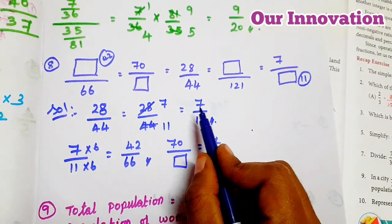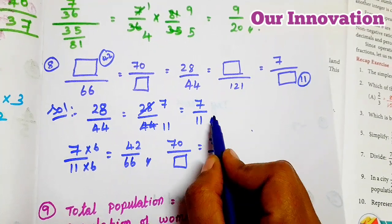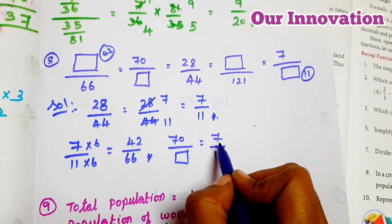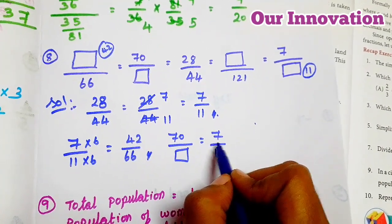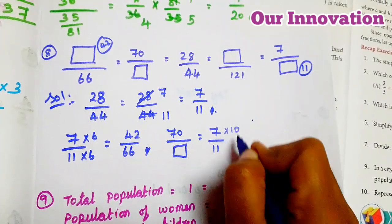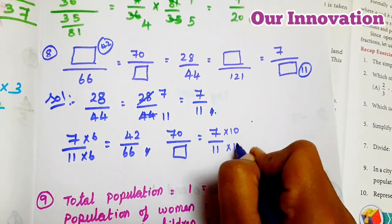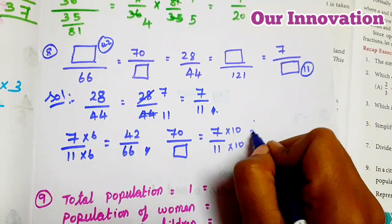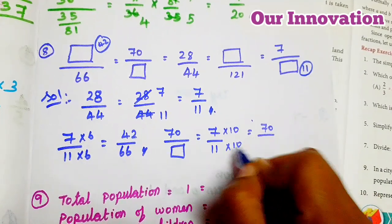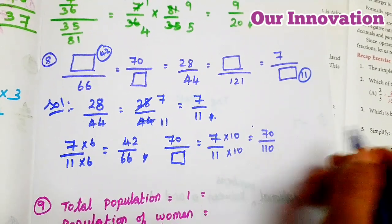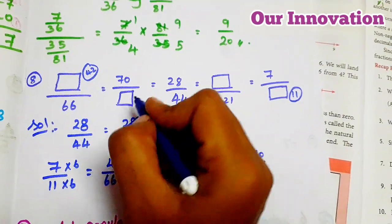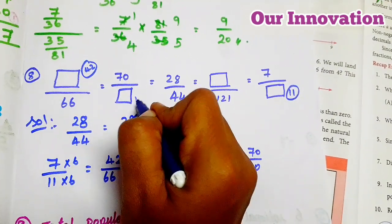Simply, what is the answer in the smallest fraction? 7 — what number? We have to write 70 into 10. Then into 10, so 7 × 10 = 70 by 110. So in the box we find the answer: 110.